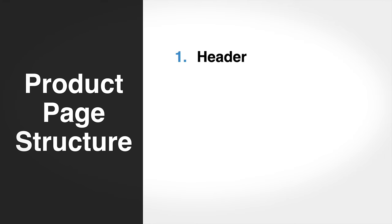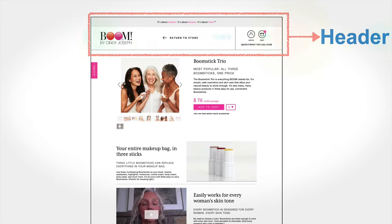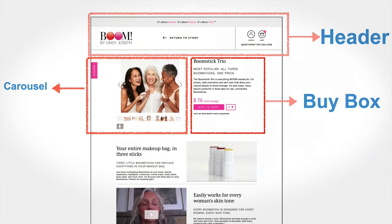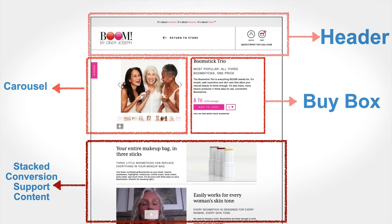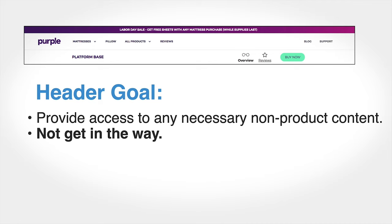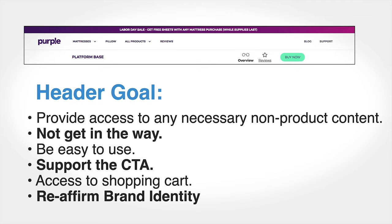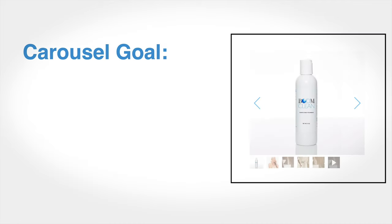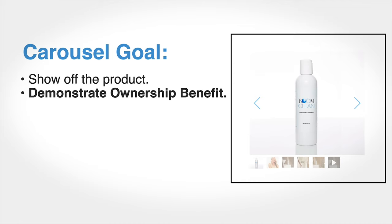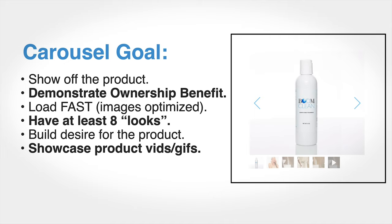Let's talk about the structure of your product page. You've got your header, your carousel, your buy box, and your stacked conversion support content. The goal of the header is to provide access to non-product content, not get in the way of the sale, be easy to use, support the call to action, give access to the shopping cart, and reaffirm the brand identity. The goal of the carousel is to show off the product, demonstrate the ownership benefit, load fast with optimized images, have at least eight looks to build desire, and showcase any videos or GIFs.